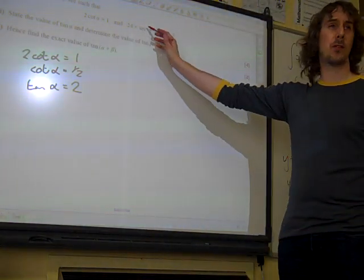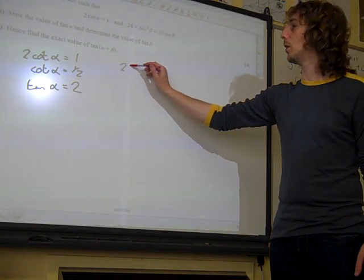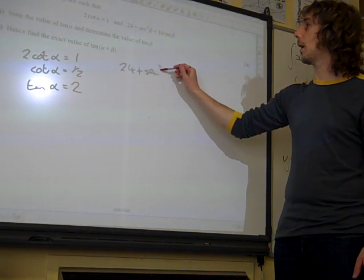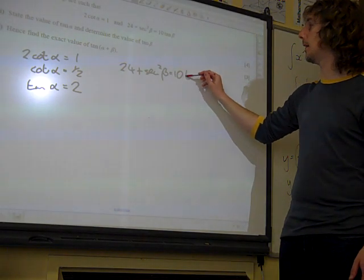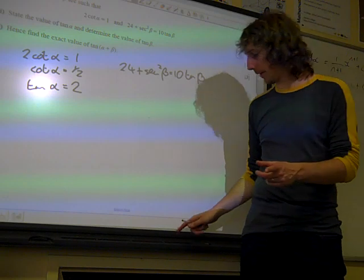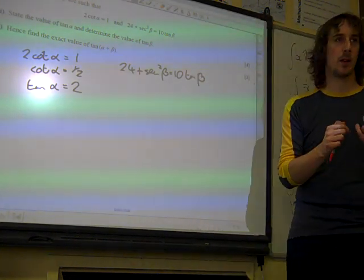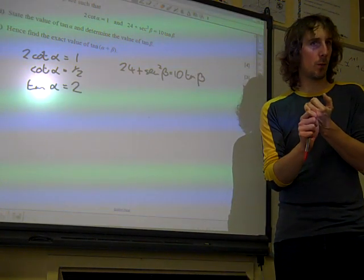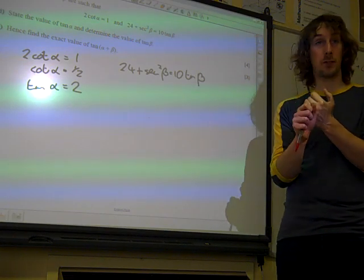We've then got this one to work with, 24 plus sec squared beta is 10 tan beta. Right, well, hang on, let's remember our core three identities from the Pythagorean identity. We then get the next one by dividing through by cos squared.